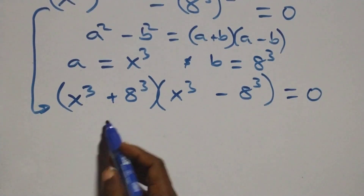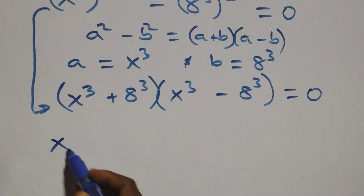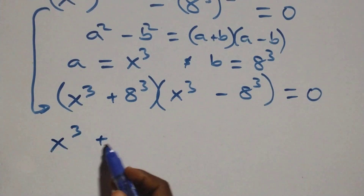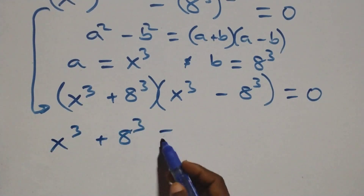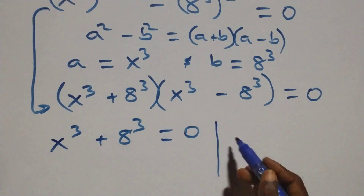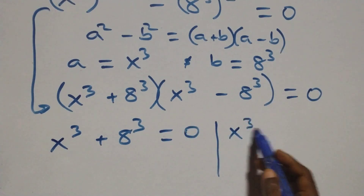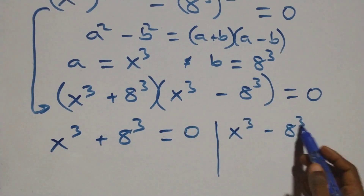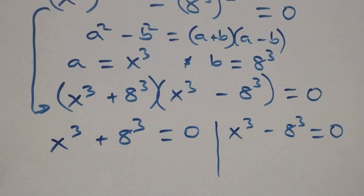Then here we have two possible cases. First of all, x raised to the power 3 plus a raised to the power 3 equals to 0, or we have x raised to the power 3 minus a raised to the power 3 equals to 0.